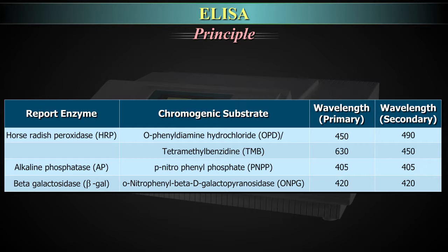When the reporter enzyme is beta-galactosidase, B-gal, the chromogenic substrate is O-nitrophenyl-beta-D-galactopyranoside, ONPG. Here, the primary wavelength and secondary wavelength are the same at 420 nm.